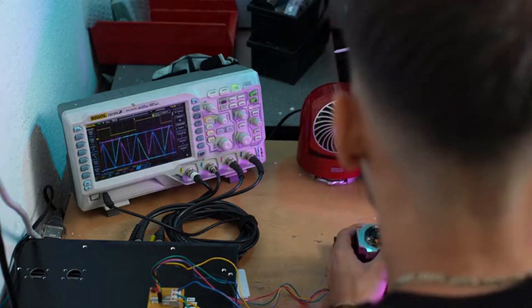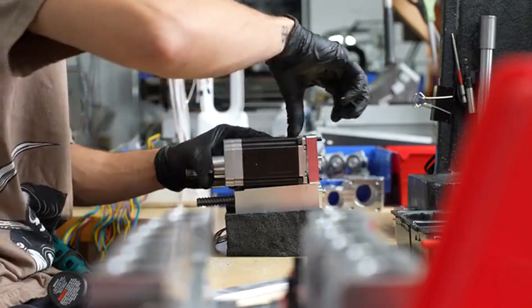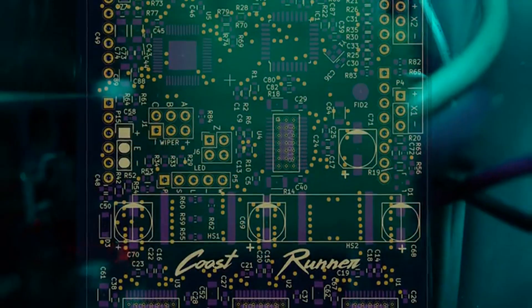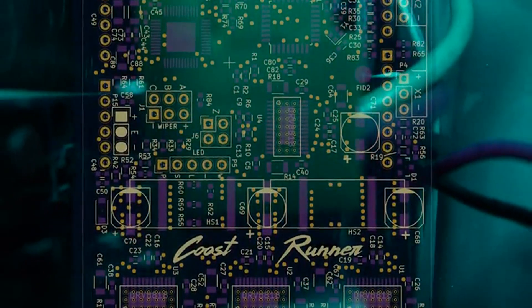Coastrunner is the result of a decade of prototyping and production. This is the machine we have always wanted to make, and all design files will be licensed open source.